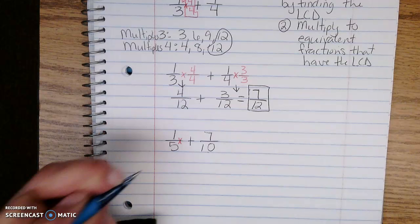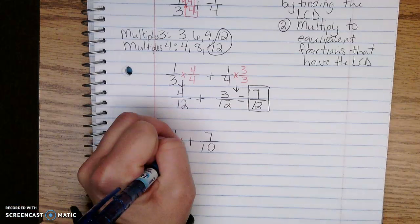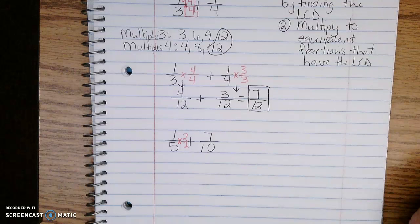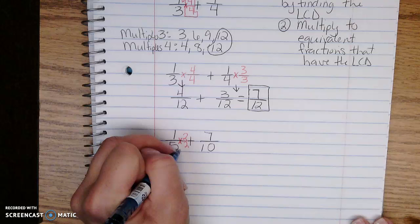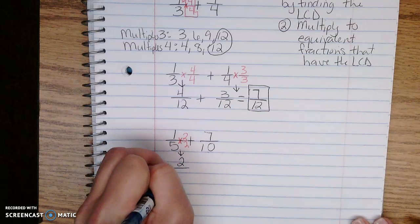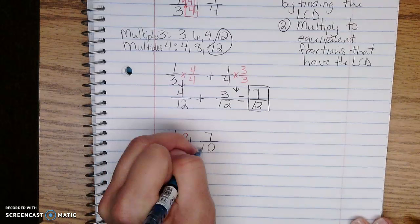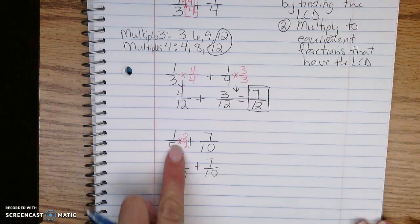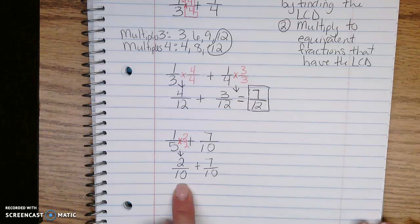1 times 2 is 2, and 5 times 2 is 10. I already have the denominator of 10 here, so I only had to change one of my fractions.